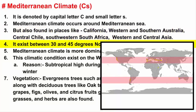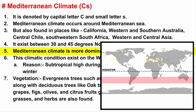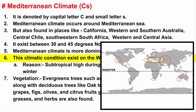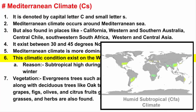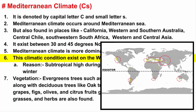Mediterranean climate roughly exists between 30 and 45 degrees north and south of the equator. However, looking at this map, since the Northern Hemisphere has more landmass compared to the Southern Hemisphere, the existence of Mediterranean climate is more dominant in the Northern Hemisphere. You will also find Mediterranean climate on the western coast of continents, whereas subtropical humid climate exists on the eastern coast. Please remember this difference.